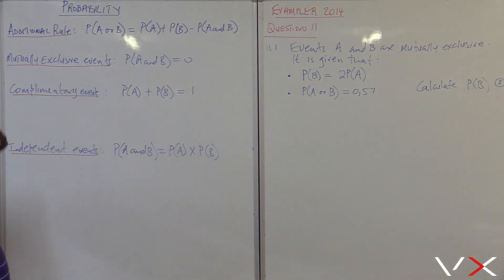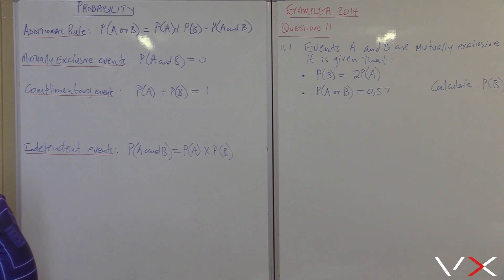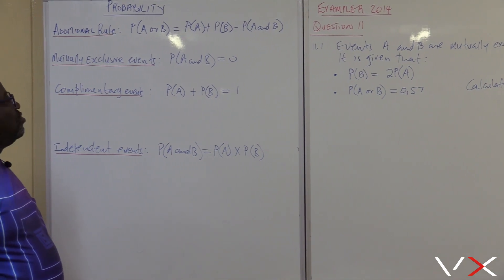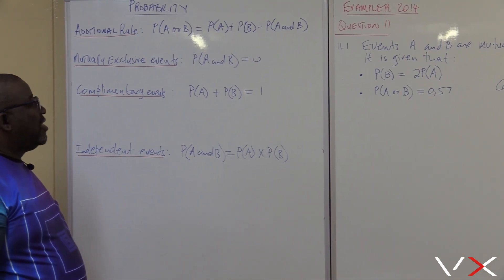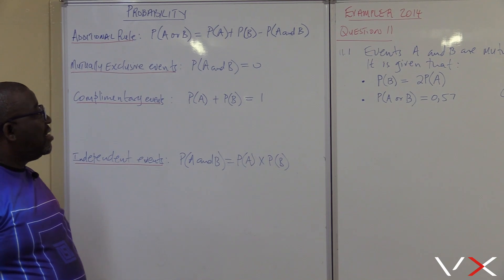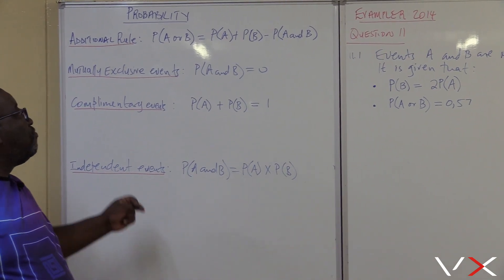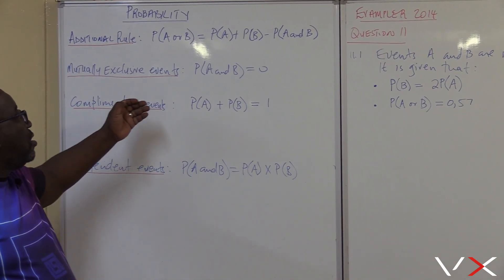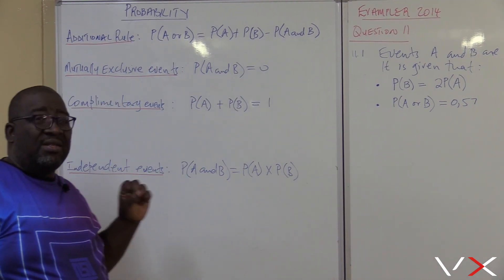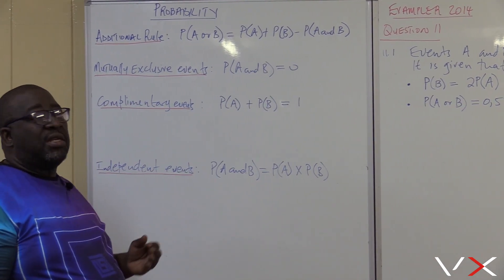This is called the addition rule. Probability of A or B is equal to probability of A plus probability of B minus probability of A and B. This probability of A and B is the intersection — that's why we minus the intersection.